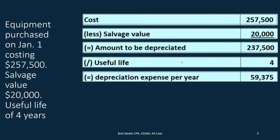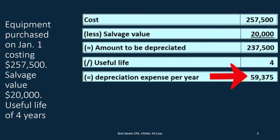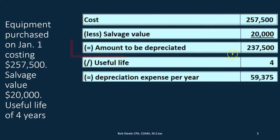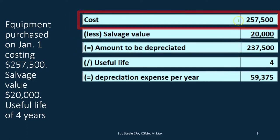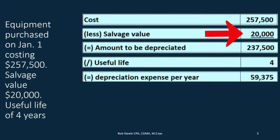So if we do that division — $237,500 divided by four — we get $59,375 per year. We're just going to depreciate it by $59,375 each year, and at the end of that time period we'll have accumulated depreciation of $237,500. The cost will remain at $257,500, leaving us with a book value equal to the salvage value of $20,000.